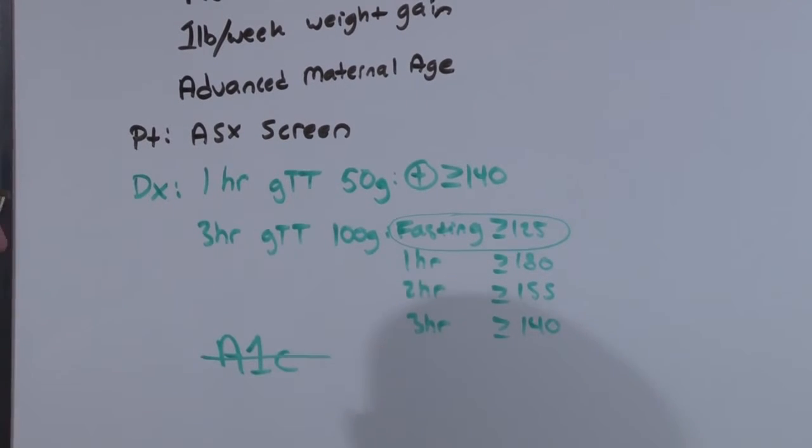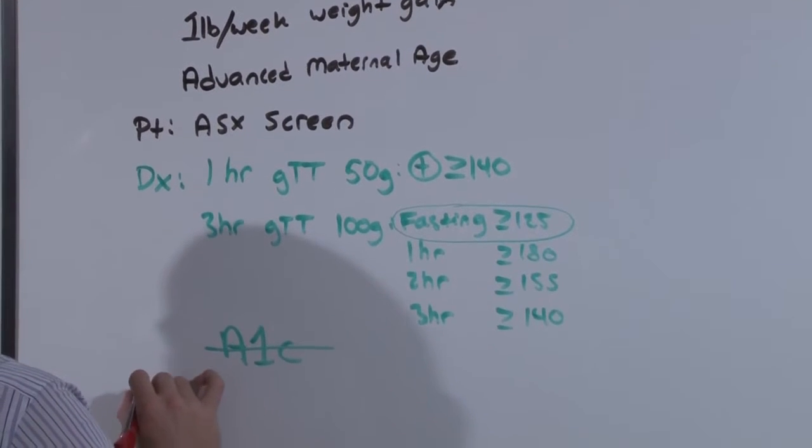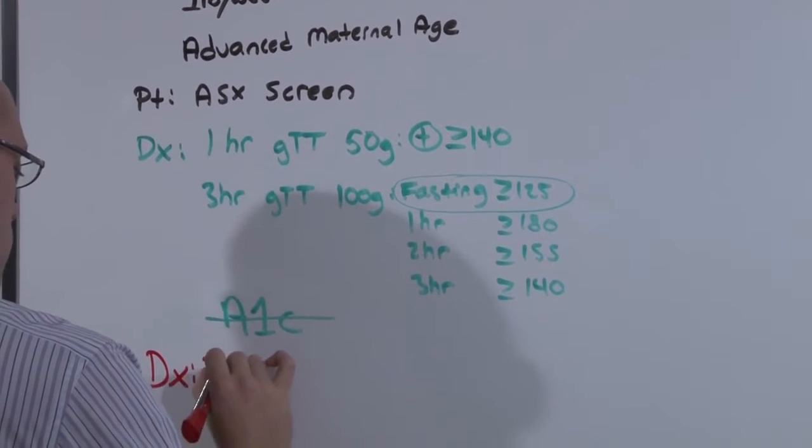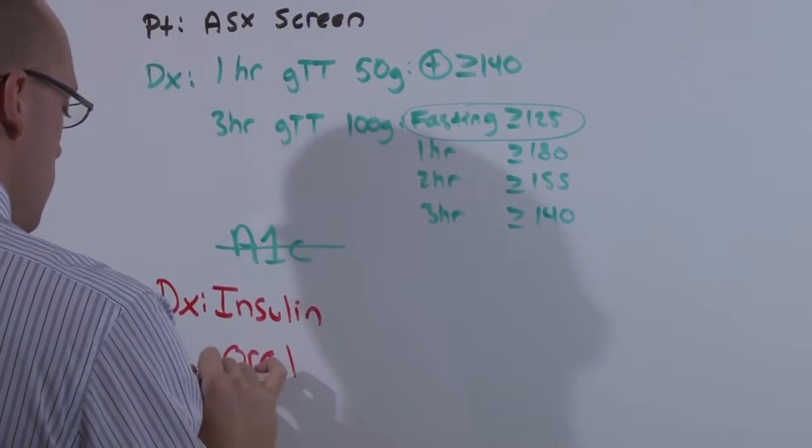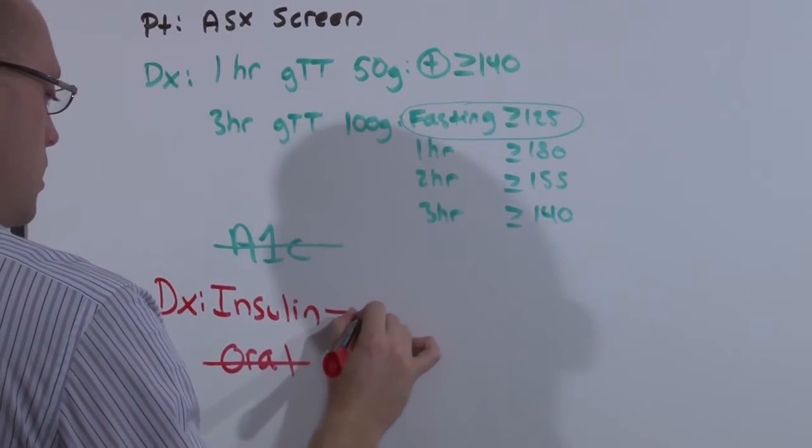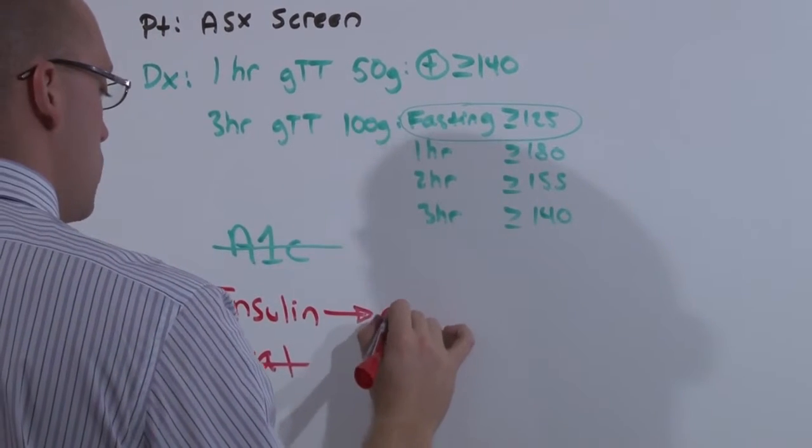And if she's developed gestational diabetes, you treat her with insulin. You will not give oral medications. Only insulin. And insulin is managed basal bolus.